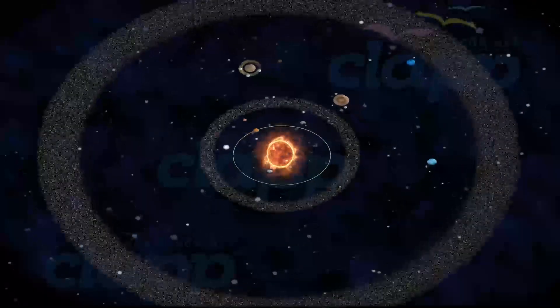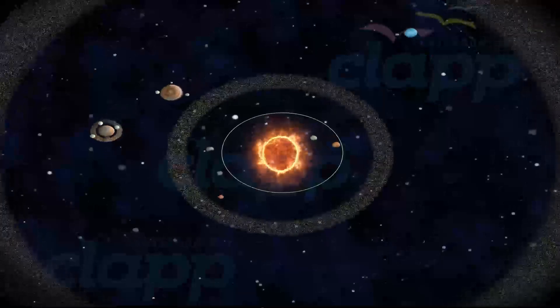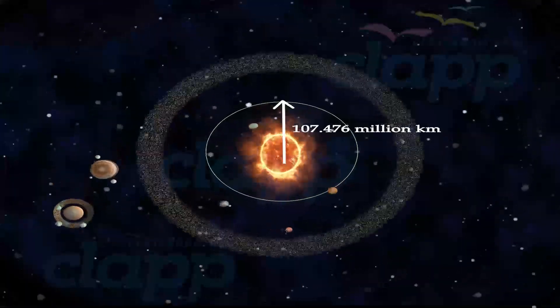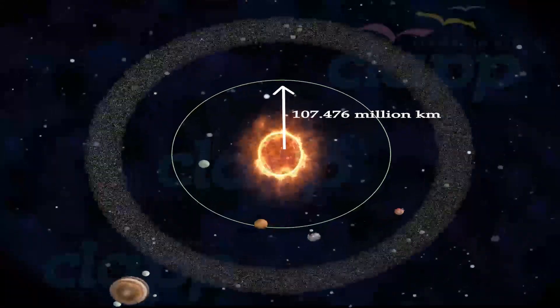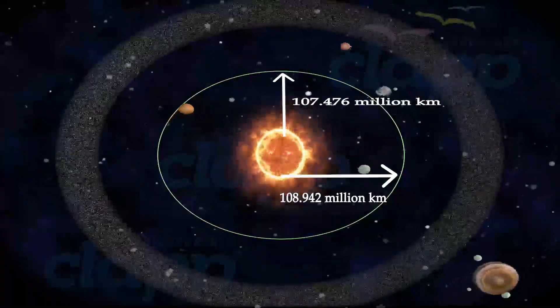Since Venus travels in an elliptical orbit around the Sun, its distance from the Sun varies from 107.476 million km to 108.942 million km.